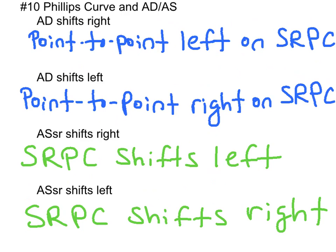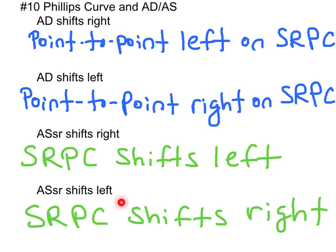The next concept has to do with the relationship between the Phillips curve and the ADAS model. When aggregate demand shifts to the right, there's going to be point-to-point movement leftward along the short-run Phillips curve. If AD shifts left, we go point-to-point to the right on the short-run Phillips curve — they work in opposite directions. If aggregate supply in the short-run shifts to the right, the entire short-run Phillips curve will shift to the left. When short-run aggregate supply shifts to the left, the short-run Phillips curve shifts to the right. AD shifts cause point-to-point movement in the opposite direction; short-run AS shifts cause the entire Phillips curve to shift in the opposite direction.